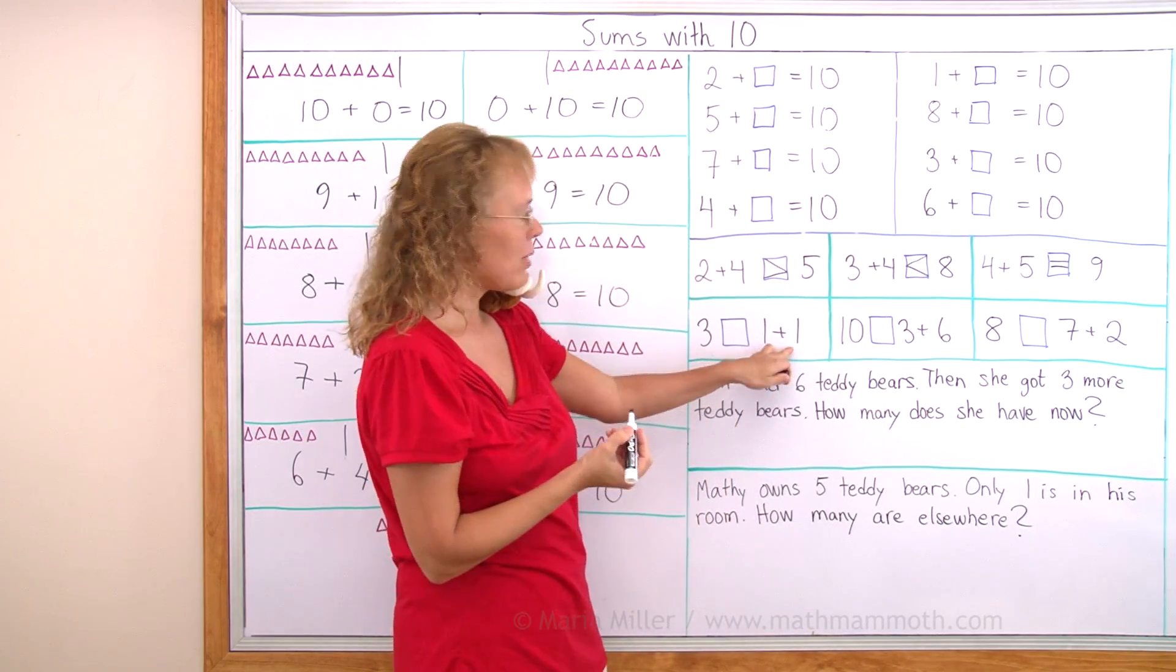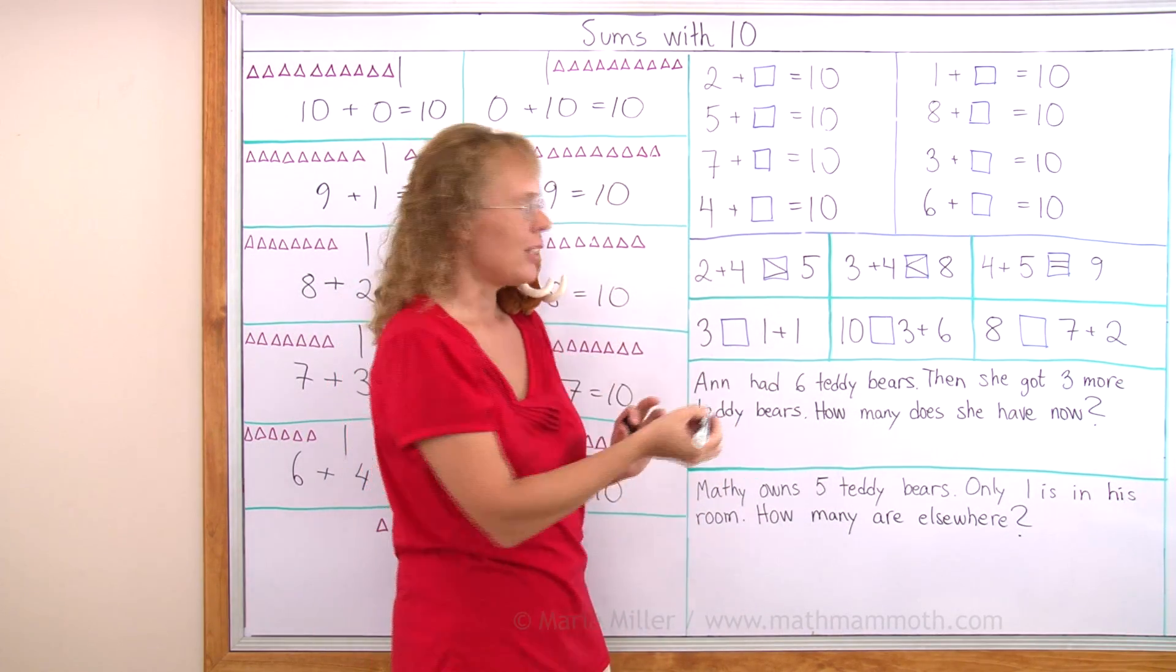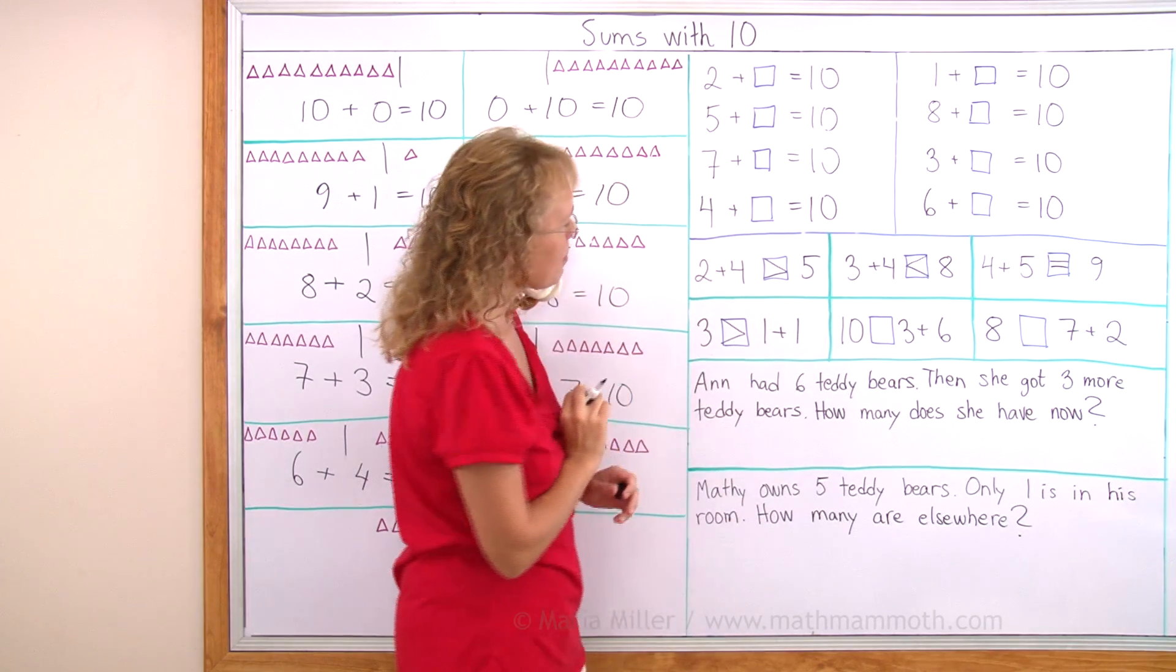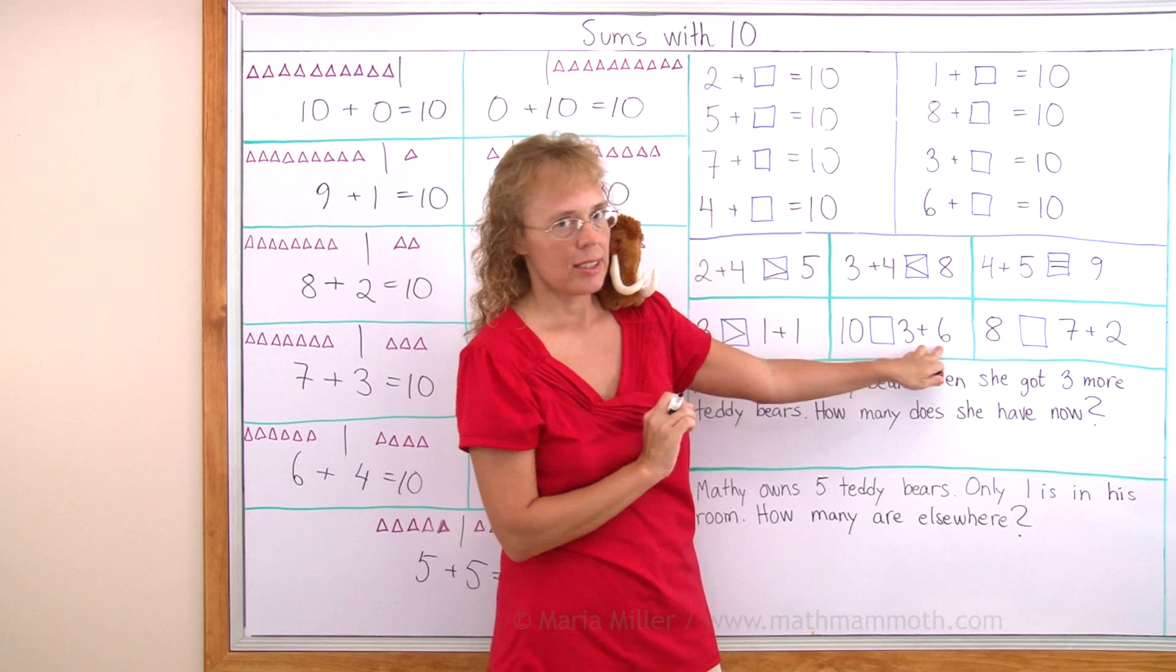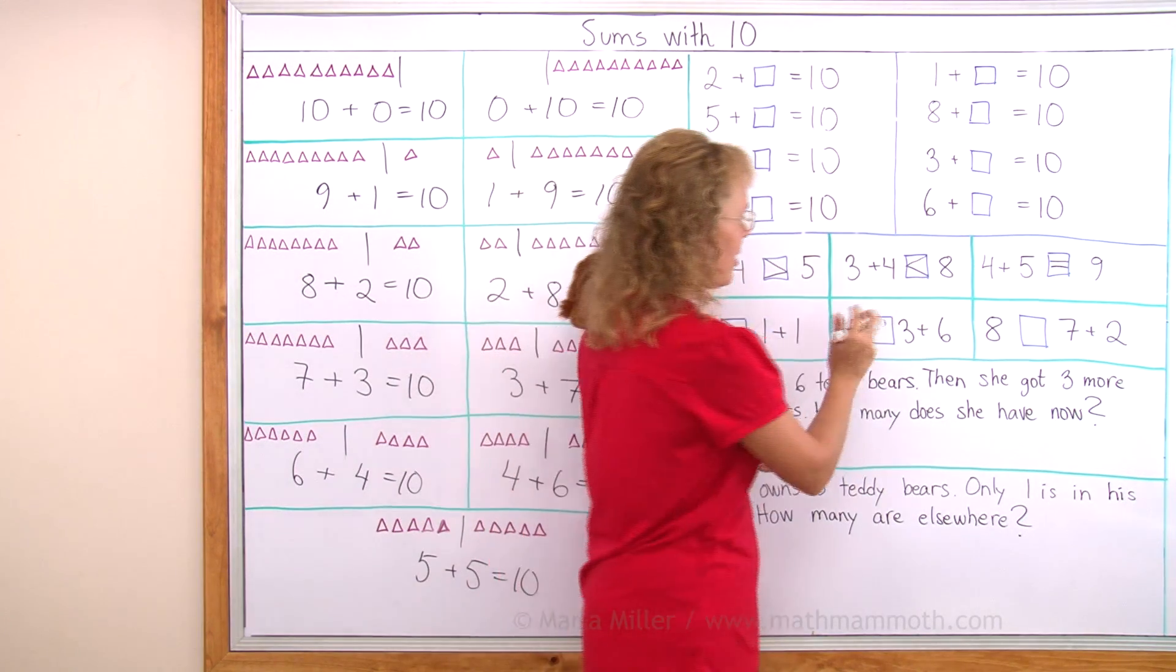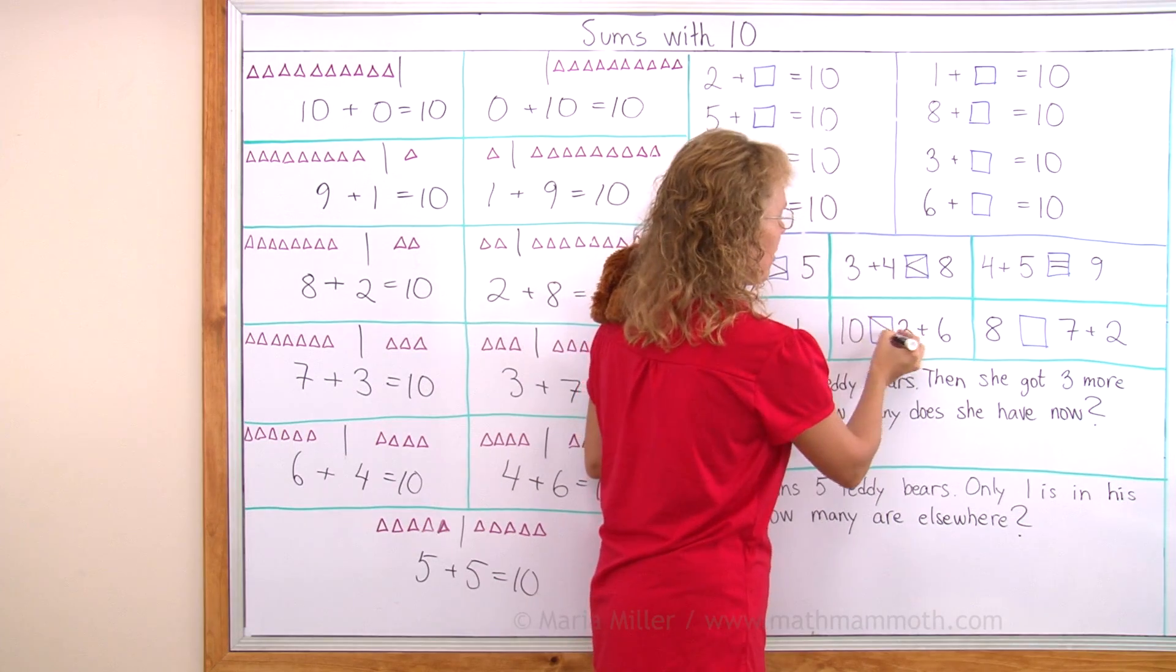3 and then 1 plus 1 on that side. 1 plus 1 is 2. So 3 is greater than 1 plus 1. 10 and 3 plus 6. 3 plus 6 again it's a sum of 9. So 10 is greater than 9. Right?